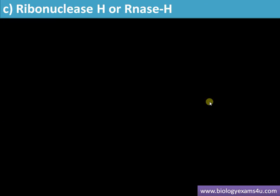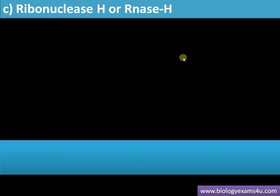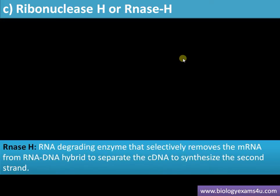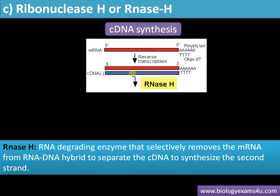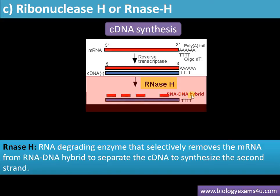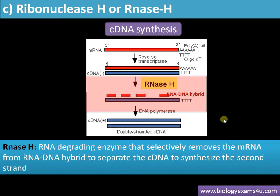The next enzyme is ribonuclease H, or RNase H. This is an RNA-degrading enzyme used to remove the RNA strand from a DNA-RNA hybrid during cDNA synthesis. An mRNA molecule is isolated from a cell — it has a poly-A tail, and an oligo-dT primer is added. Reverse transcriptase then synthesizes a cDNA from this mRNA template, producing a DNA-RNA hybrid. To synthesize the second strand of cDNA, the RNA strand must be removed, and this is done by RNase H.